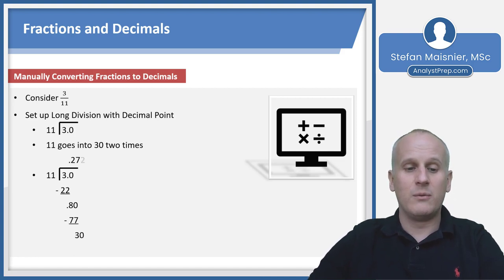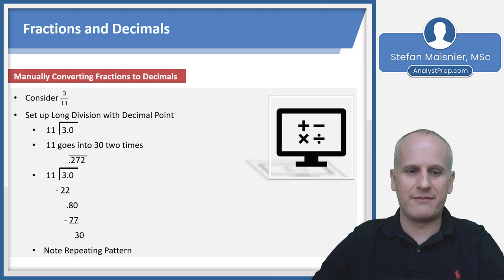11 goes into 80 seven times. Subtract 77 from 80, leaving 30 again. 11 goes into 30 two times. At this point, we see a repeating pattern. Put the bar over top, and we know three elevenths is 0.27 repeating. This is something you're unlikely to need on the exam, but it helps understand how to convert fractions to decimals.